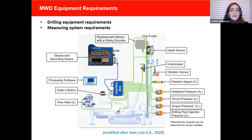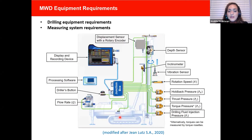The measuring system can be either manual or automatic; this presentation and the guideline focus only on the automatic measuring system. We need sensors and transducers installed on the drill rig: displacement sensor, depth sensor, inclinometer, vibration sensor, and sensors to measure rotation speed, fluid injection pressure, and flow rate. For a hydraulic driven rig, pressure transducers measure torque and thrust; for a mechanical driven rig, torque rosettes and strain gauges measure these parameters. In addition to these sensors and transducers, we need a data recorder, displays, and a data acquisition system.